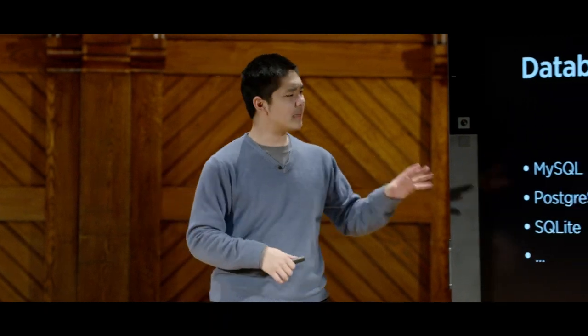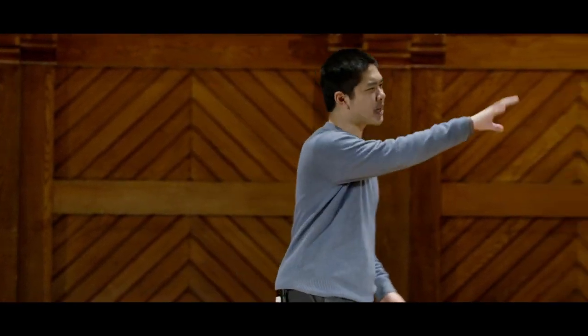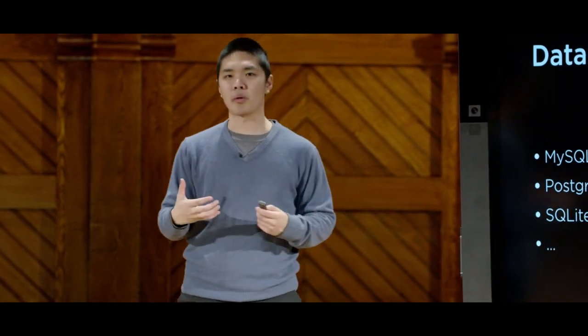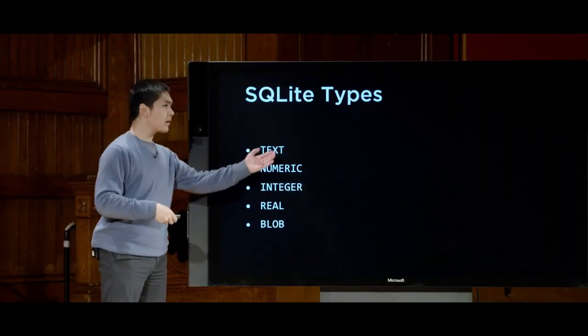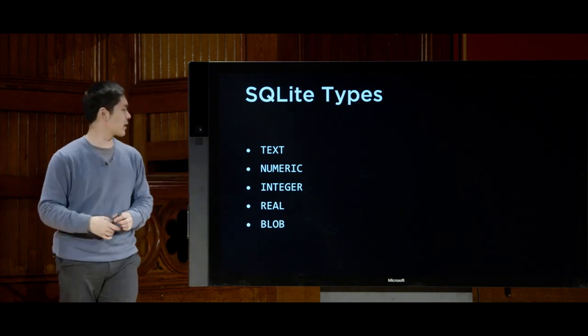As we begin to store data inside a SQL database, each piece of data has a type — just as Python has integers, strings, lists, and tuples. SQL too has types representing various categories of information. Each database management system has its own set of types. SQLite has a fairly short list: it supports text for strings — something like a city name, for instance.